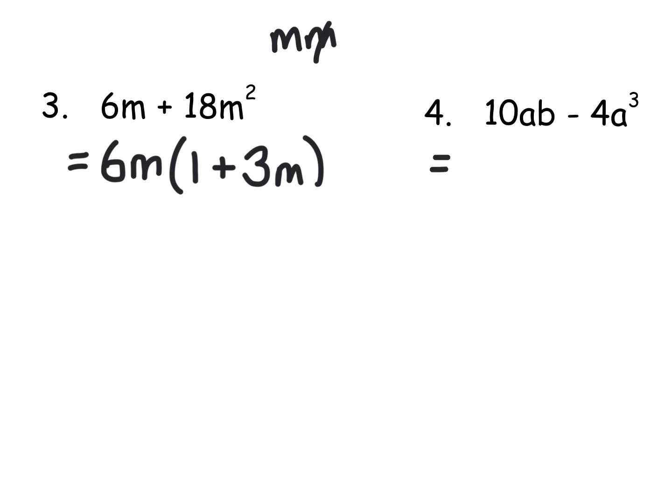And then my number 4. We've got a 10AB minus 4A cubed. So 10 and 4 are both in the 2 times table. They both have an A in common. So we take out 2A as our common factor. 10 divided by 2 is 5. A divided by A is 1. So the kind of A disappears. And you're still left with a B there. Takeaway.